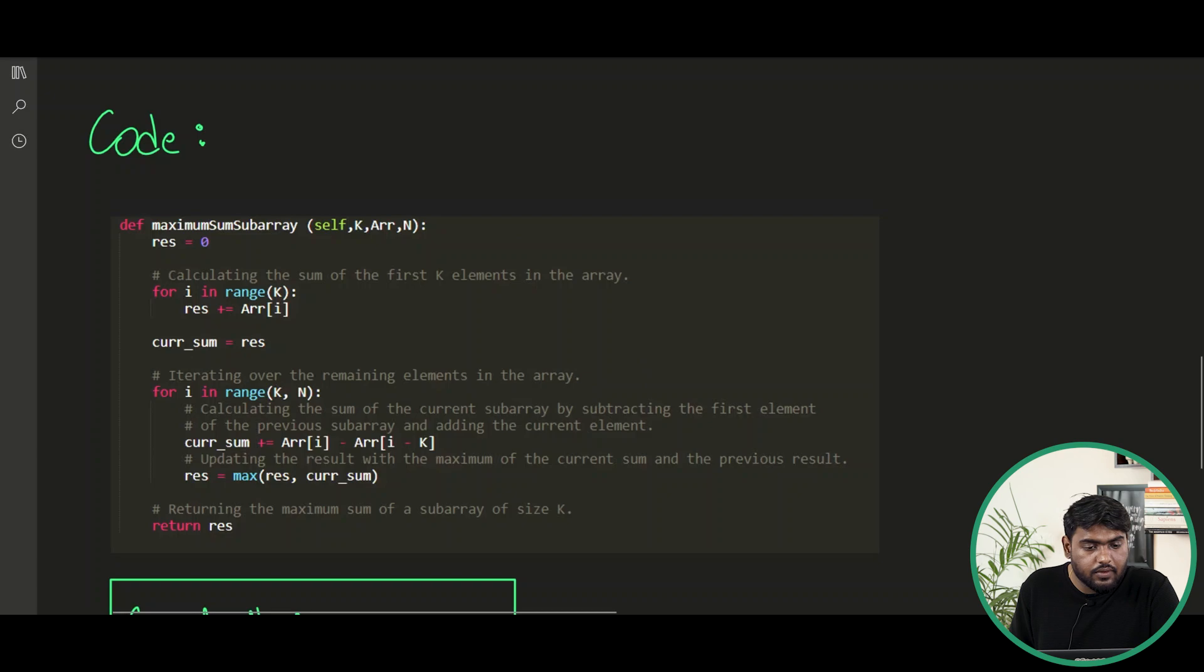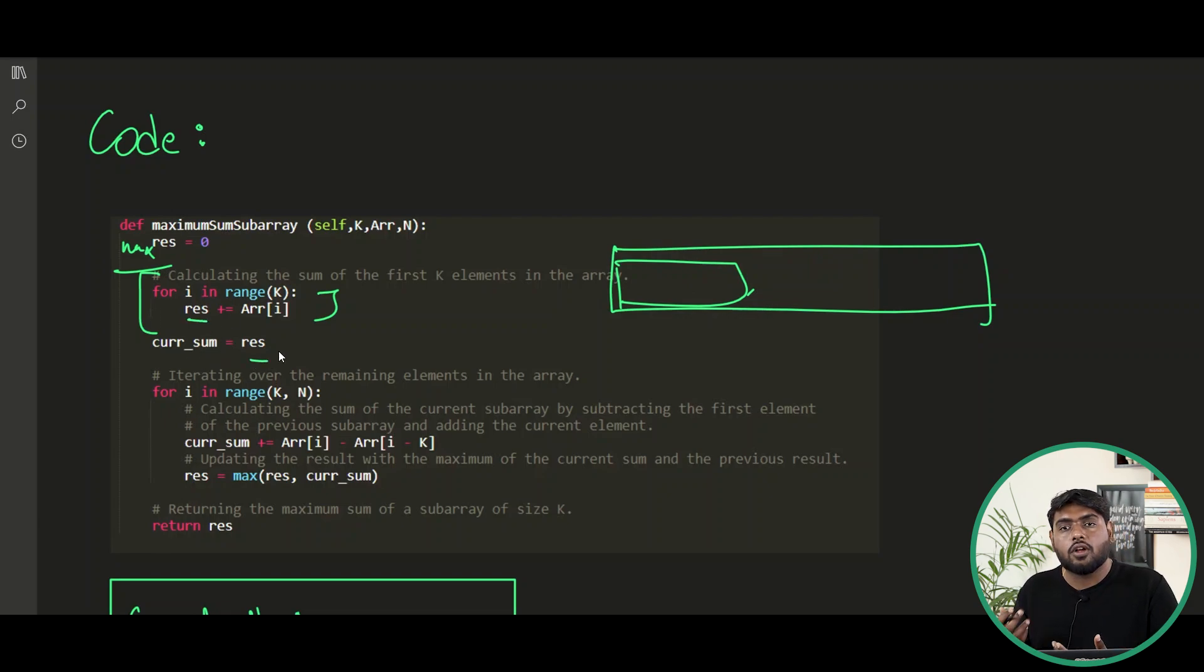So here is a code for the same, just as we have discussed. I will first create my result or you can say maximum. It will be keeping the track of maximum. I have just calculated the first chunk. That means this was my whole array. I calculated the first k window. It is stored in the result. And currently because we do not have anything else we are going to consider that as a current sum and the maximum both.